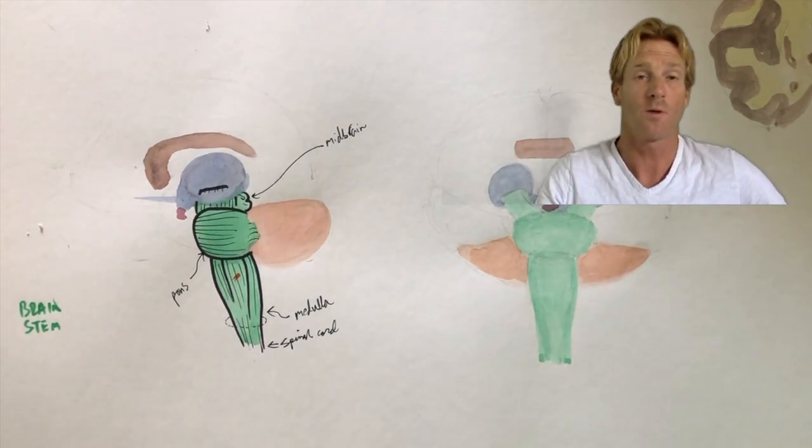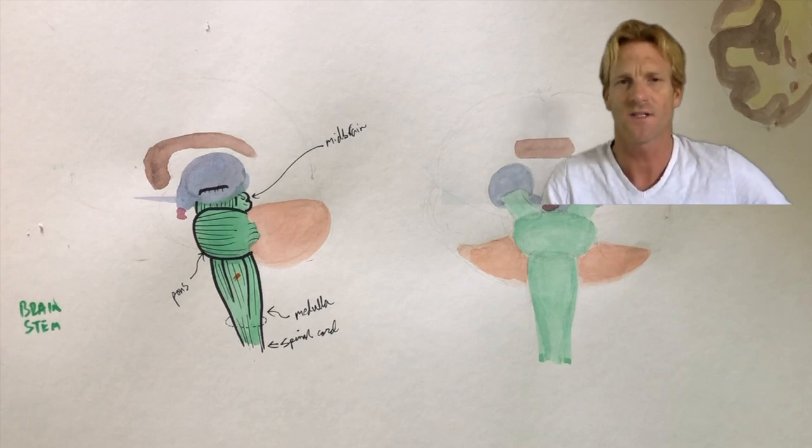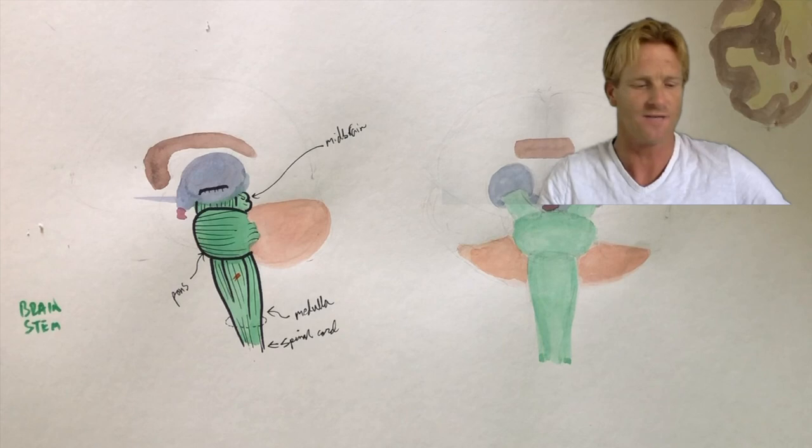Collectively the brain stem is going to connect the spinal cord to the higher centers of the brain, but it also controls a lot of behind-the-scenes functions, things like coughing, vomiting, heart rate, breathing rate, and the size of our vessels.